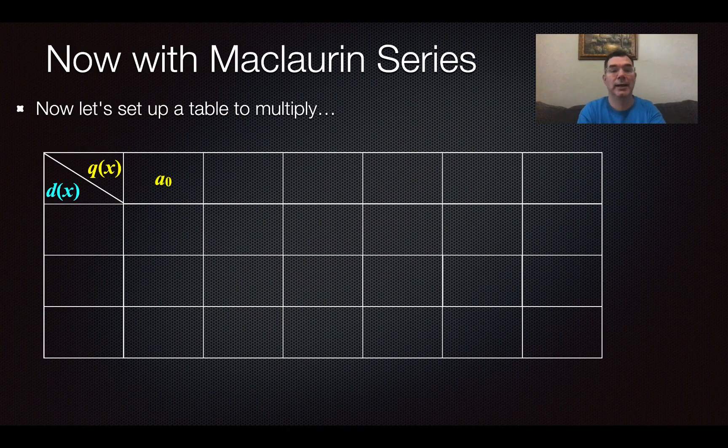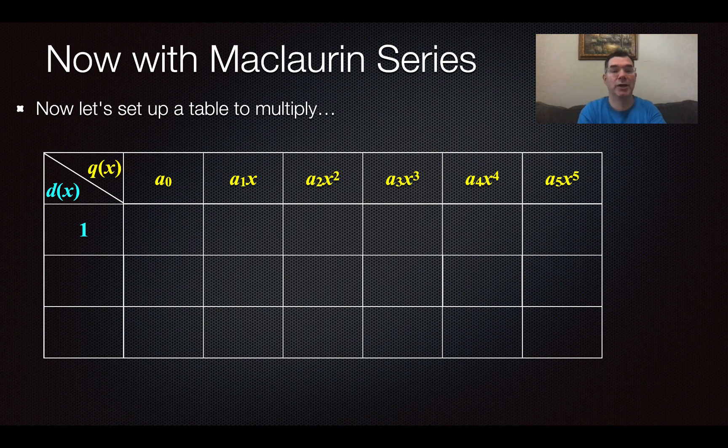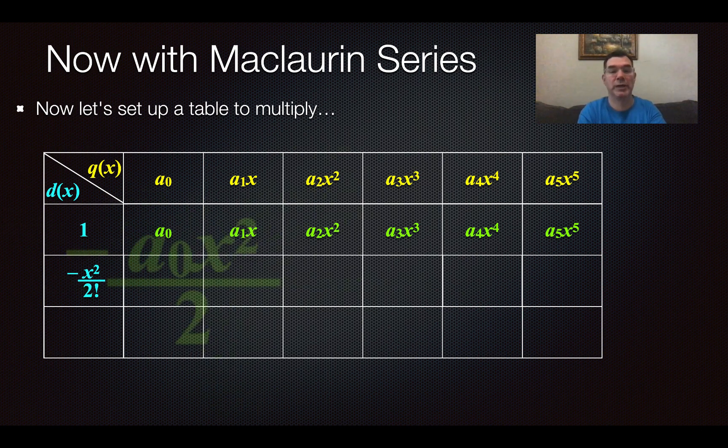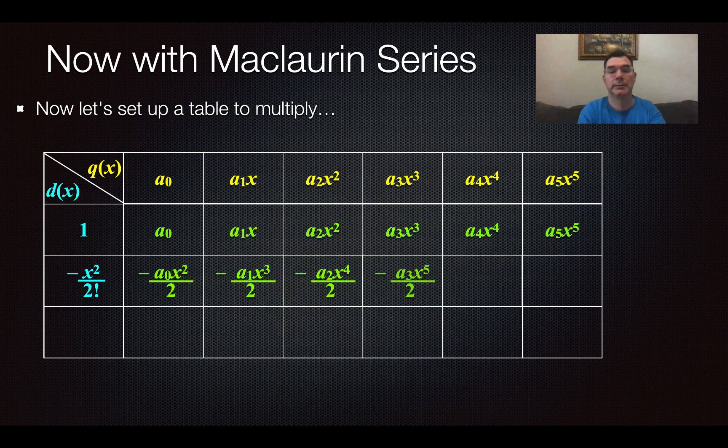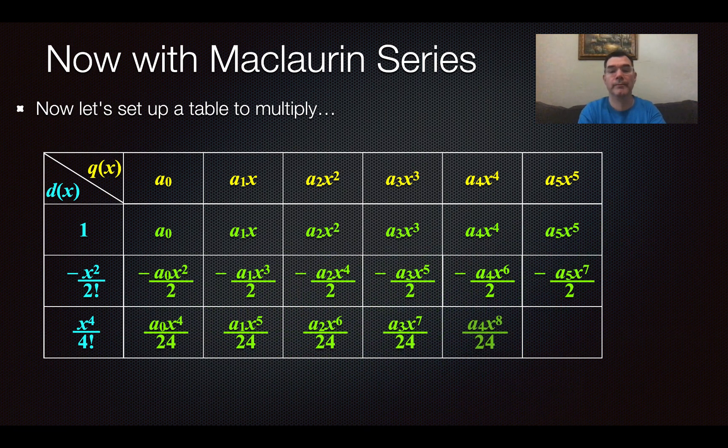So I'm going to set up a table to multiply. If you watch the video that I did for multiplication, it's set up in a very similar way. I've got q(x), which has all of my a's in it, along the top. And d(x) is going to go down the left-hand column term by term. The first term in d(x) is 1, so if I take 1 and multiply by everything in that yellow row, I'm going to get the exact same thing. The next term in d(x) is negative x²/2, so I multiply it by all of those yellow terms at the top. And then the last term that I'm going to concern myself with in d(x) is x⁴/4!. If I multiply that by every yellow term in the top row, it's going to look like this.